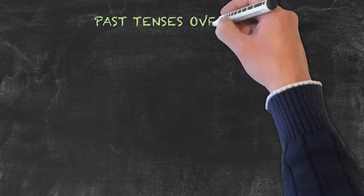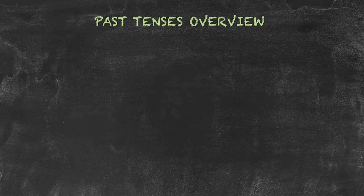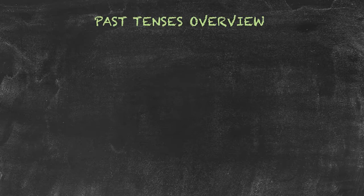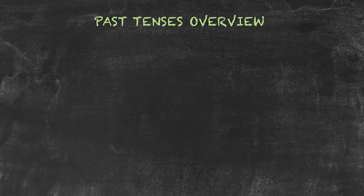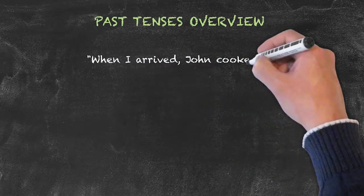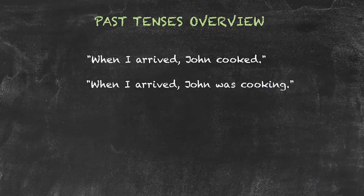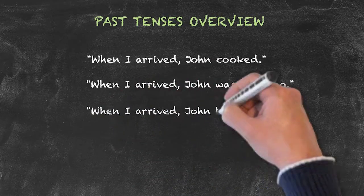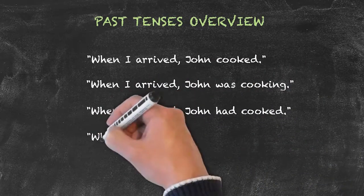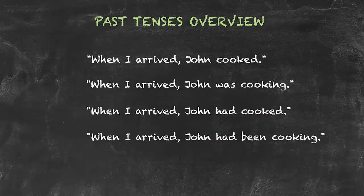Let's now have a quick review of the past tenses. Here we have four very similar example sentences, each using a different past tense. This should allow us to be able to look at the differences in usage between these tenses. When I arrived, John cooked. When I arrived, John was cooking. When I arrived, John had cooked. When I arrived, John had been cooking.